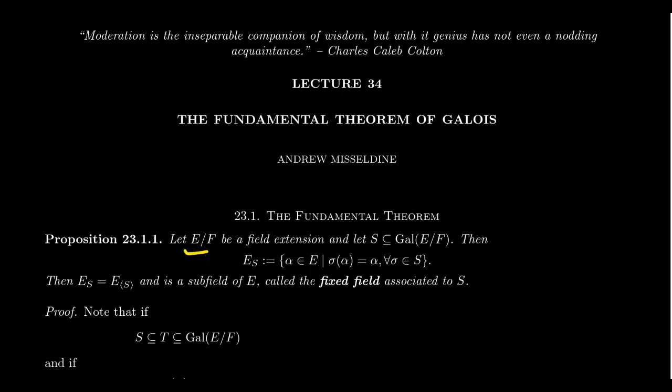We have some field extension E over F, and I'm making no assumptions about it. This could be a finite or infinite extension. It could be Galois or not Galois, normal or not normal, separable or inseparable — no assumptions, just a field extension. As we've defined in this lecture series, the set Gal(E/F) is the set of all field automorphisms on E which leave the subfield F fixed.